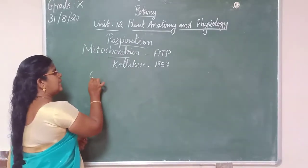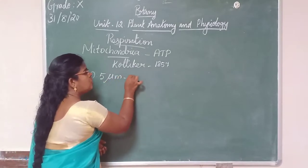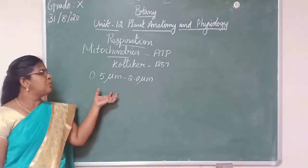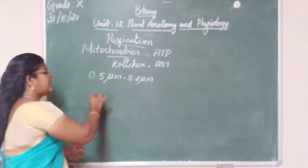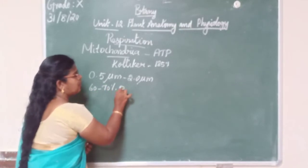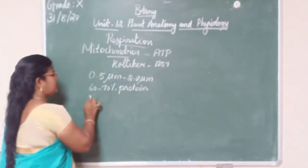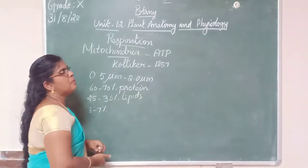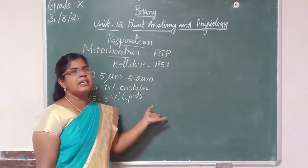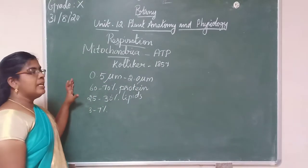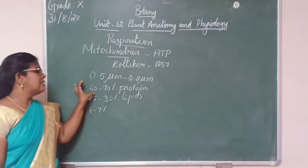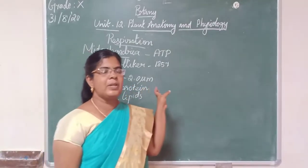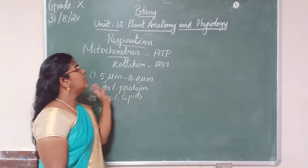The size of mitochondria ranges from 0.5 μm to 2.0 μm. Mitochondria contain 60 to 70% protein, 25 to 30% lipids, and 3 to 7% DNA along with tRNA and other enzymes required for cellular respiration.